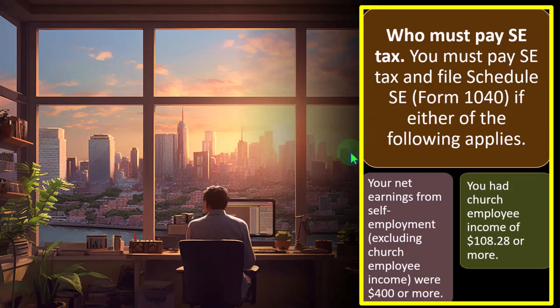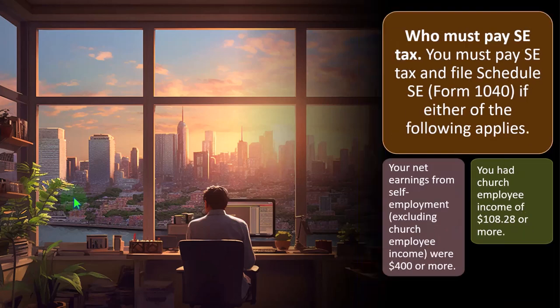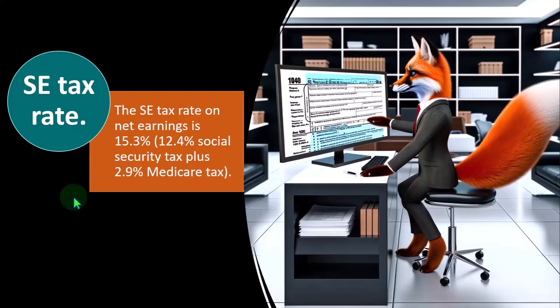The second trigger is if you had church employee income of $108.28 or more — a somewhat odd threshold number that came up long ago in the tax code and was never updated, making it look a bit ridiculous today.